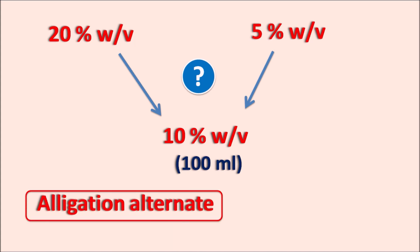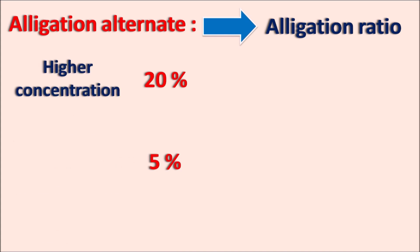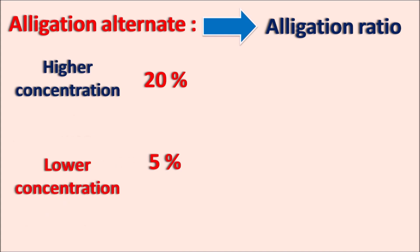This is where allegation alternate plays an important role — we can easily calculate the ratios by which two concentrations must be mixed to produce an intermediate concentration. In allegation alternate, the first step is to identify the allegation ratio, which is the ratio of mixing two solutions to produce an intermediate concentration. Here we have 20% as the higher concentration and 5% as the lower concentration, and we need to prepare a 12% — wait, a 10% intermediate concentration. We simply apply the allegation principle.